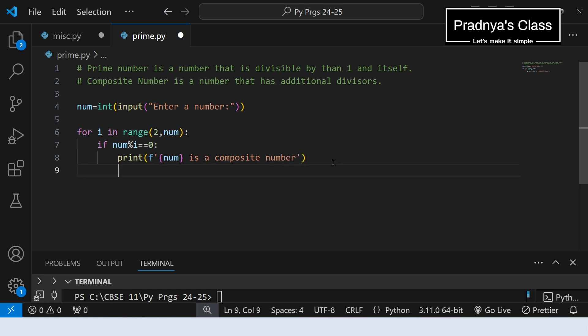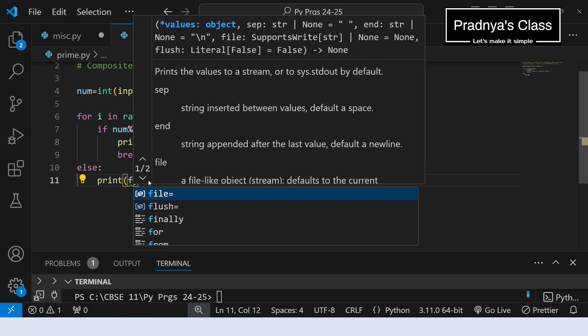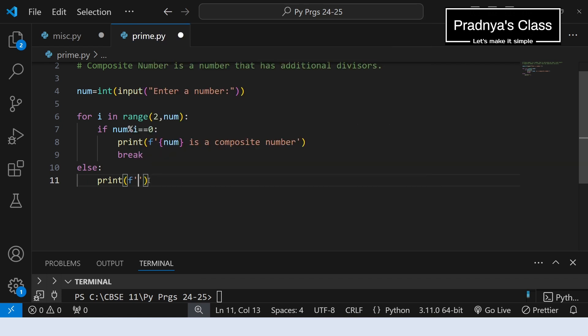If the number is divisible by one value of i, no need to check for other values. We will use break statement and come out of the loop. If it is not divisible by any value of i it will come to the else part of the for loop. It means it's a prime number. So let's print the message. Number is a prime number.